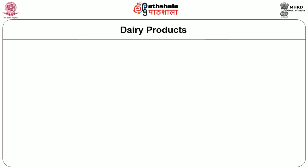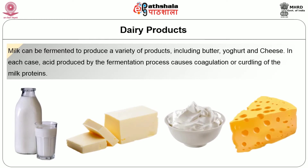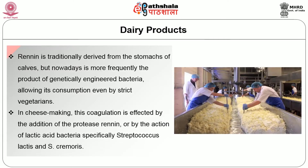Next, we will discuss dairy products. Milk can be fermented to produce a variety of products including butter, yogurt and cheese. In each case, acid produced by the fermentation process causes coagulation or curdling of the milk proteins. Rennet is traditionally derived from the stomachs of calves but nowadays is more frequently the product of genetically engineered bacteria. In cheese making, this coagulation is effected by the addition of the protease rennet, or by the action of lactic acid bacteria, specifically Streptococcus lactis and Streptococcus cremoris.